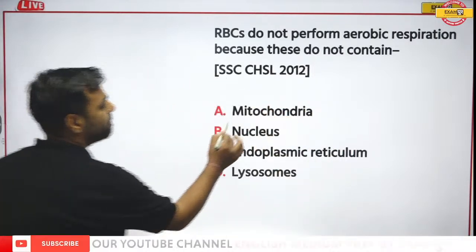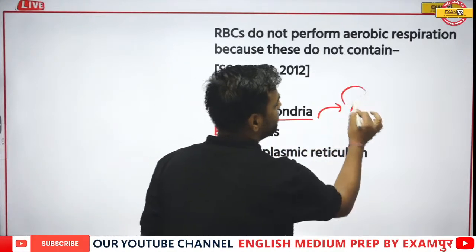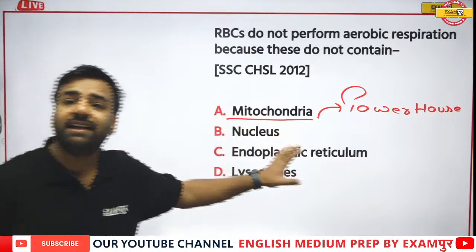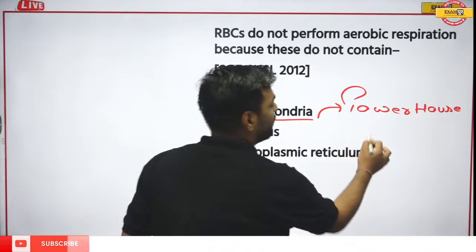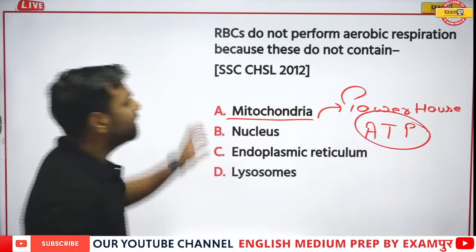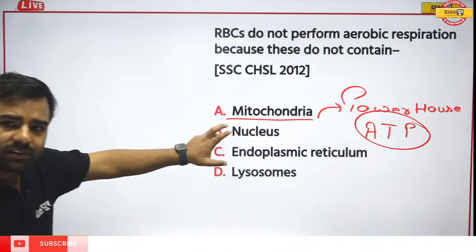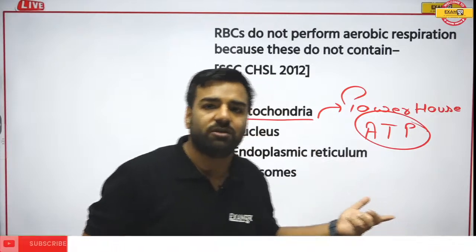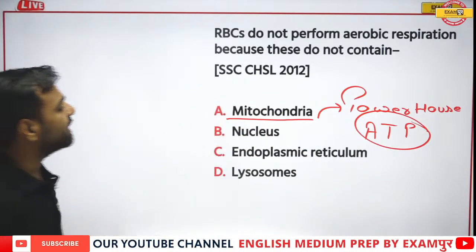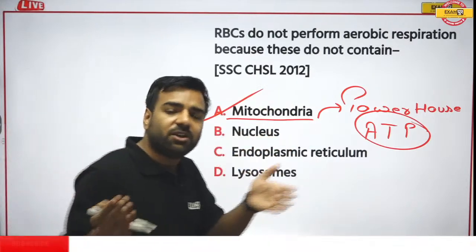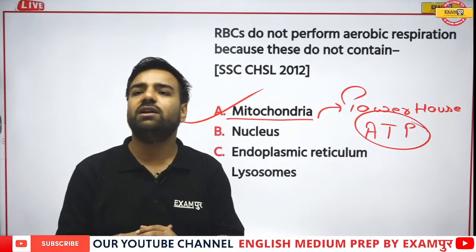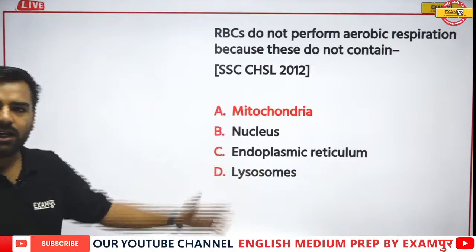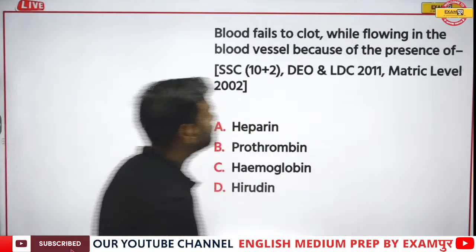Mitochondria is known as the powerhouse of the cell because it generates energy in the form of ATP — adenosine triphosphate. RBCs do not perform aerobic respiration because they lack mitochondria. Without mitochondria, respiration is not possible. So option A, mitochondria, is correct.